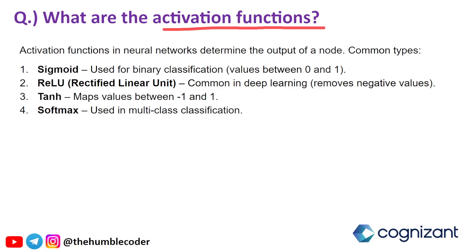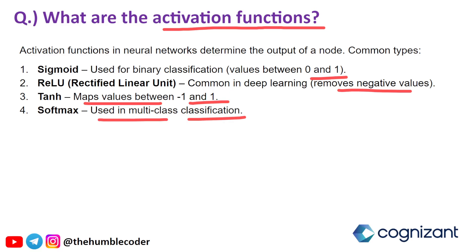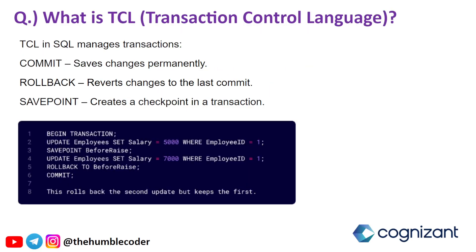The next question is: what are activation functions? Activation functions in neural networks determine the output of a node. Common types are: sigmoid, used for binary classification with values between 0 and 1; ReLU (Rectified Linear Unit), common in deep learning as it removes negative values; tanh, which maps values between -1 and 1; and softmax, used in multi-class classification. This kind of question will be asked based on your skill set — if you have mentioned experience with machine learning or data science, then you will get these types of questions.